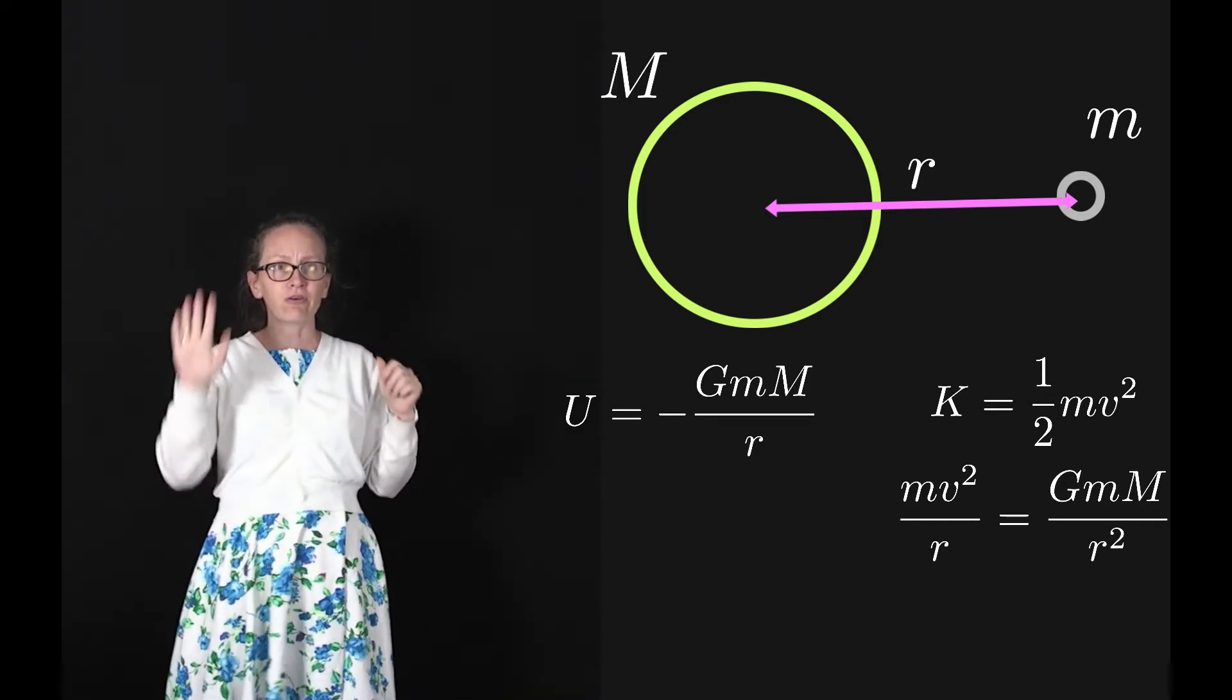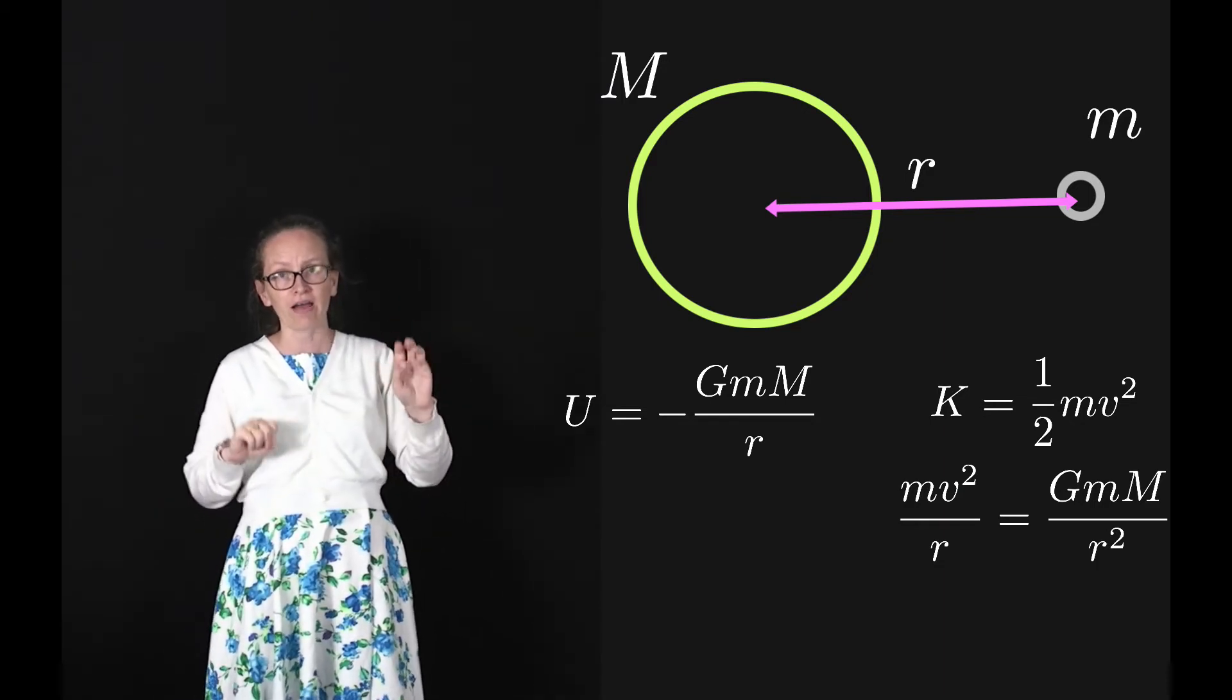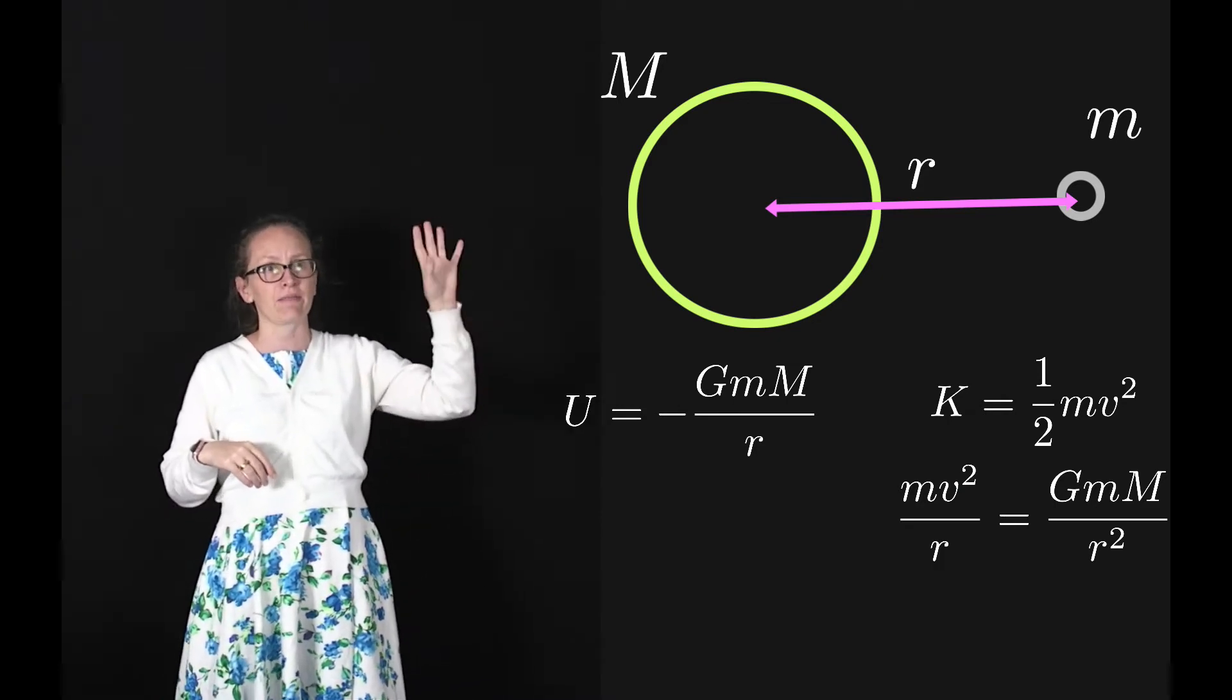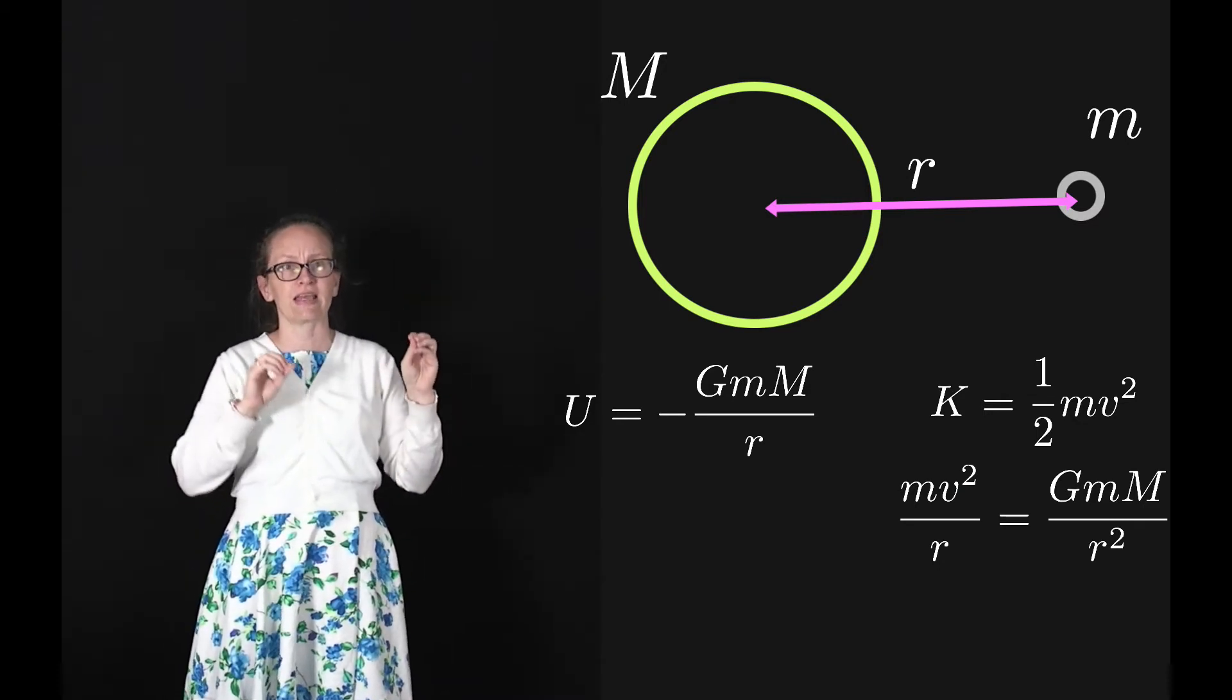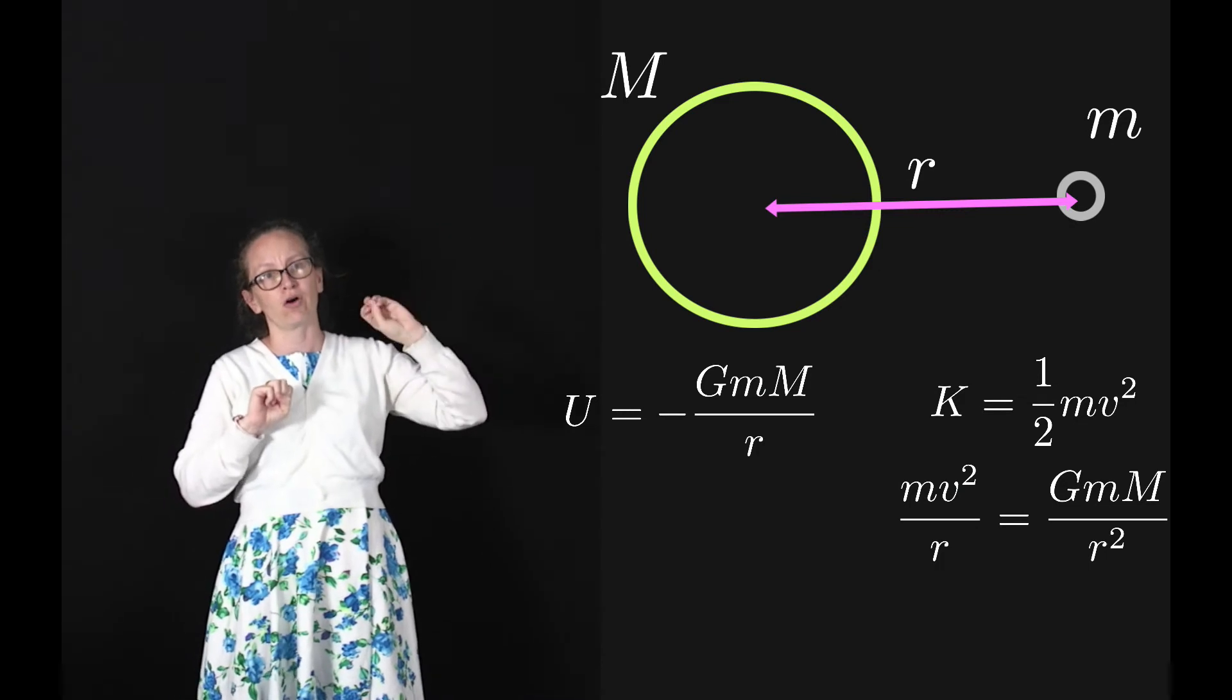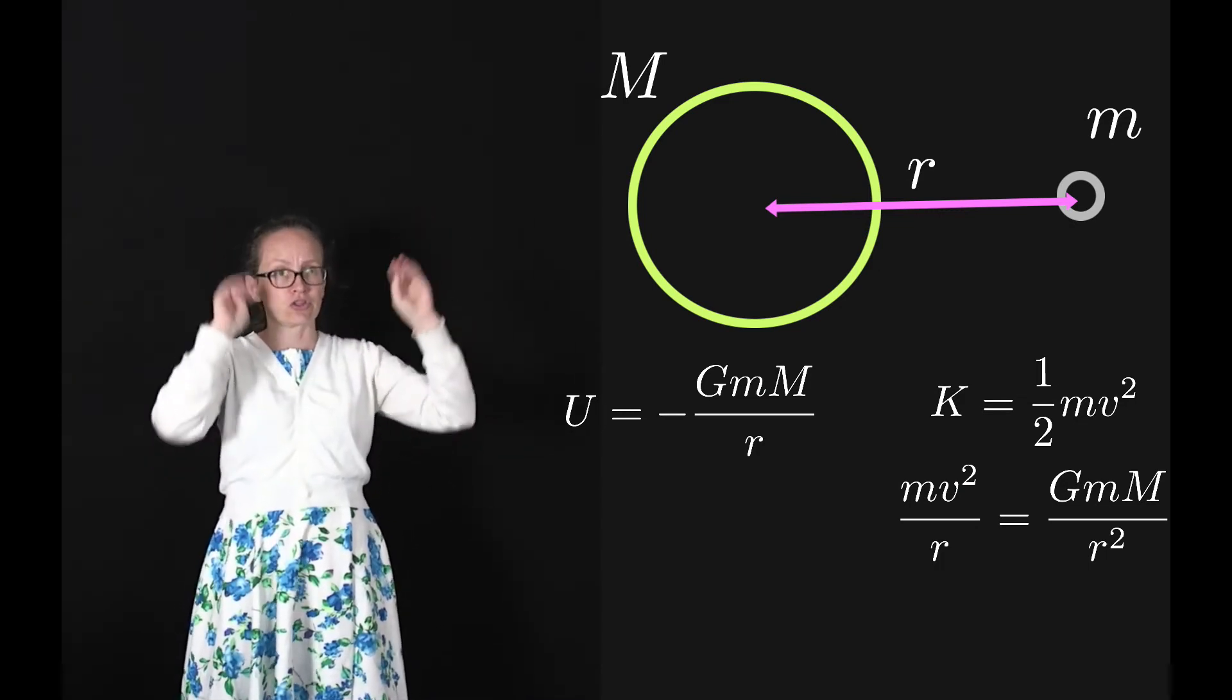We can write that the force equals the centripetal force, which is mv²/r, which equals the gravitational force, which is GmM/r². From this we can see that mv² equals GmM/r, just canceling out the 1/r from those two terms.